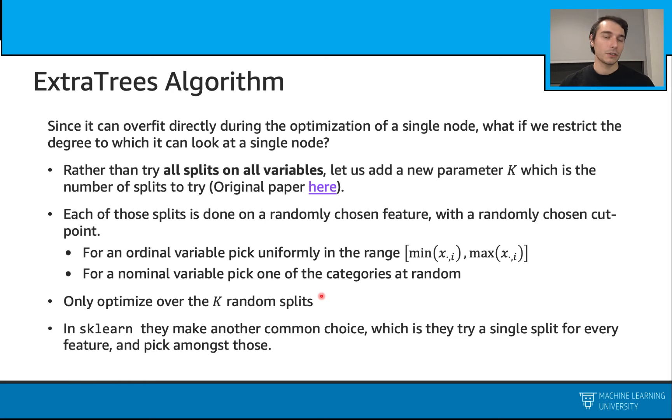And we will have the ExtraTrees algorithm for that. Instead of trying all splits on all variables, we will just have this new parameter k. This will be the total number of splits that we will try.